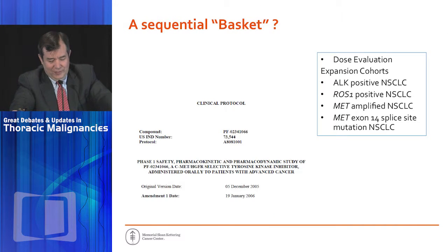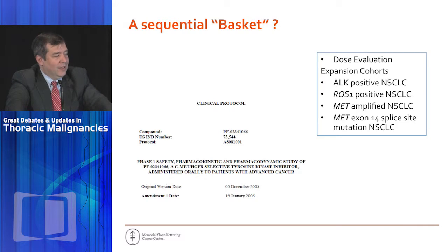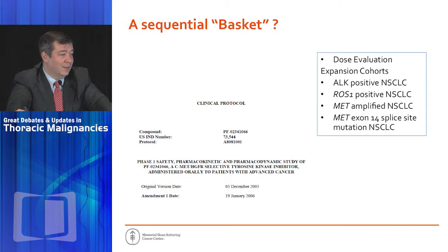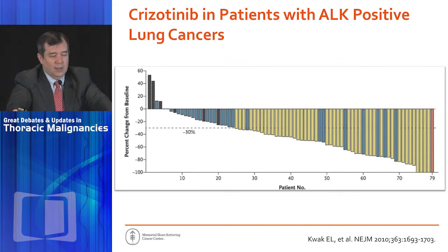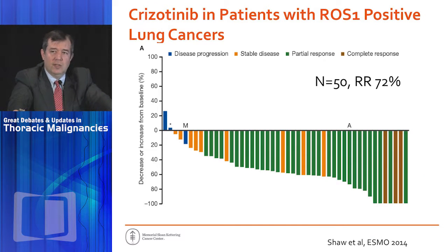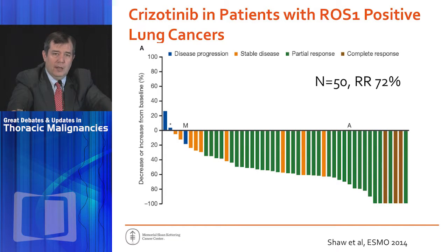I think of the phase one trial of crizotinib as a kind of sequential basket, beginning back in 2007. It begins as all phase one trials do with dose evaluation, then had expansion cohorts developed one at a time. The first basket for ALK-positive lung cancer led to an FDA approval. There's also a basket for ROS1-positive patients, all within the same trial. Ongoing baskets continue to look at MET exon 14 skipping, MET amplification, and other targets.